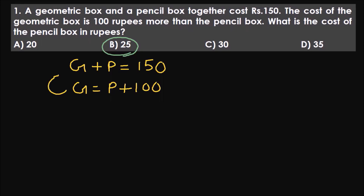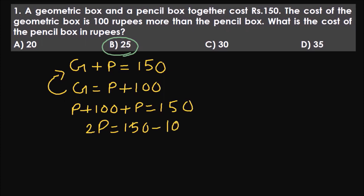Substitute G as P plus 100 into the first equation. P plus 100 plus P equals 150, so we have 2P equals 150 minus 100, which is 50. Therefore P equals 25. That is the answer.